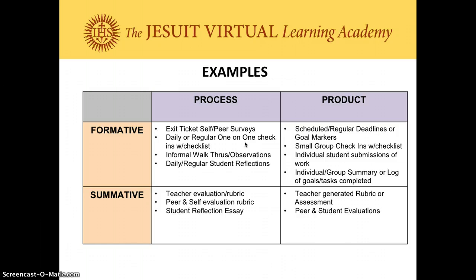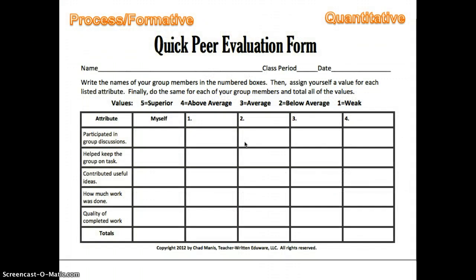Here is a quick peer evaluation form pulled from one of the resources in Unit 2. Students are able to rate themselves and their group members on a 1 to 5 scale. It's up to you whether you make it anonymous or allow students to freely share their thoughts on their partners — it can be anonymous in that they just turn it in to you and group mates don't see it. This is a process formative assessment, and it is quantitative because students are using a 1 to 5 scale to grade their classmates.